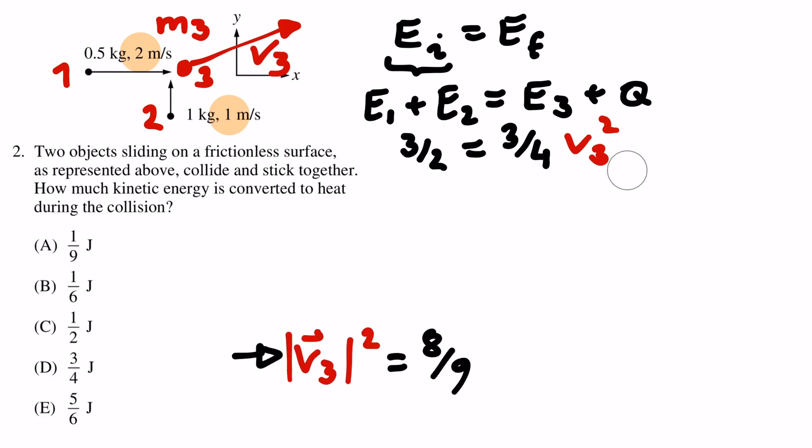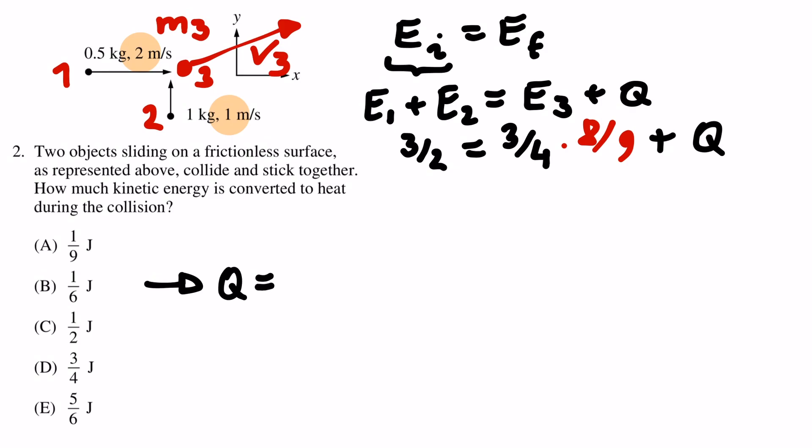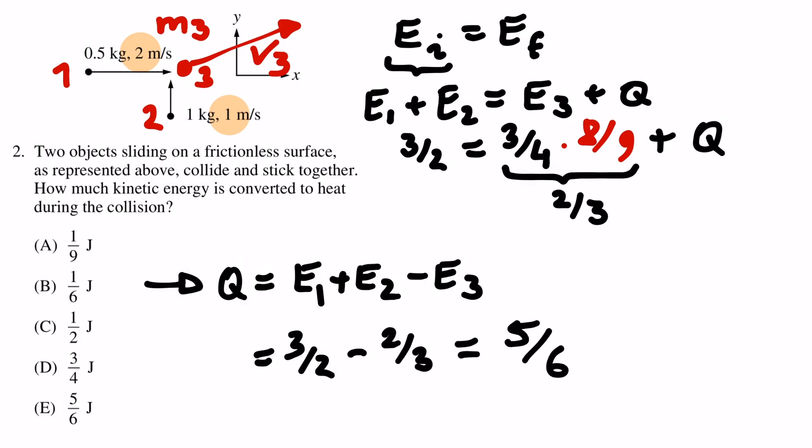Now we can input this into our third energy and arrive at the result of 2 thirds. The amount of heat is now simply given by E1 plus E2 minus E3, which is 3 over 2 minus 2 thirds, and that yields 5 over 6. So answer E is the correct one.